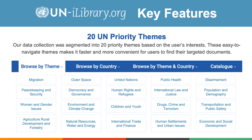There are over 20 UN priority themes available on the UN iLibrary. This navigation tool makes it faster and more convenient for users to find their documents. The 20 themes represent the breadth and depth of topics, which is very unique to the United Nations. The aggregation of such a disparate body of work is very useful to researchers.